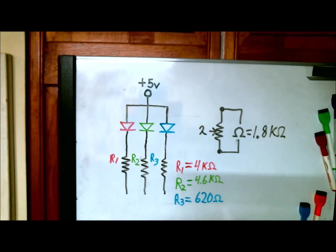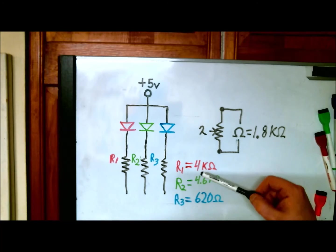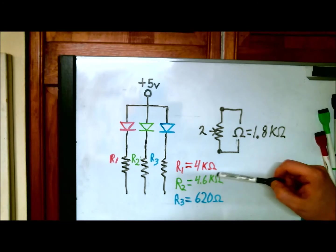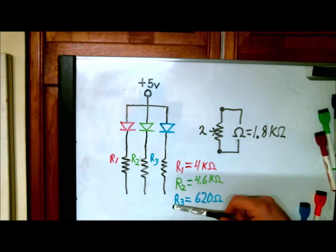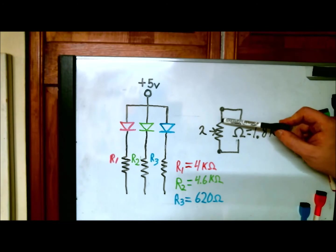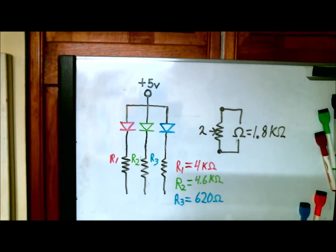So there you go. The resistors I ended up using are R1, being the red resistor here, is 4,000 ohms. R2 is 4,600 ohms. And R3 is 620 ohms. Now you can see there's quite a difference between the first two resistors and the blue resistor. And the reason for that, I assume, is because this photoresistor does not see blue light very well.